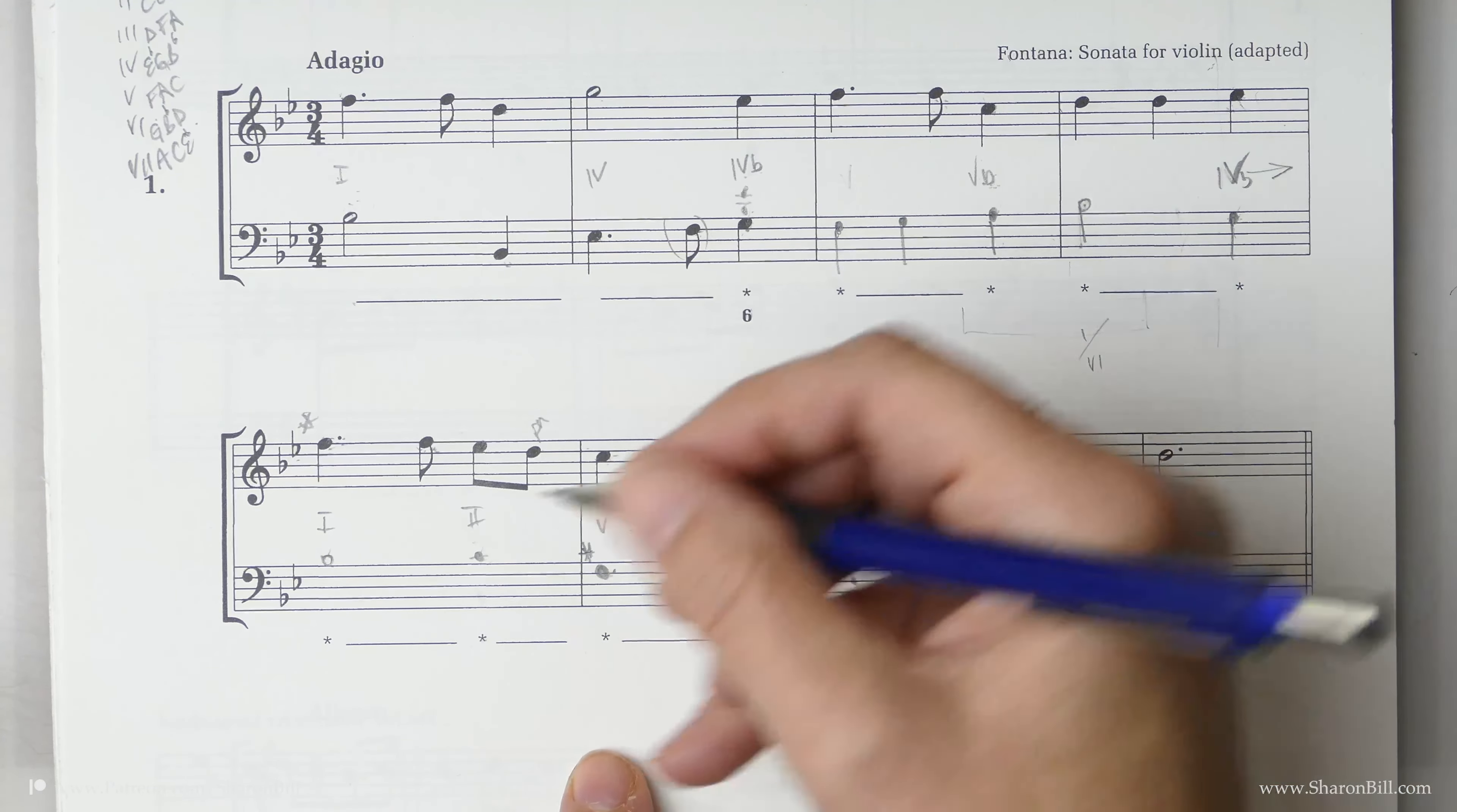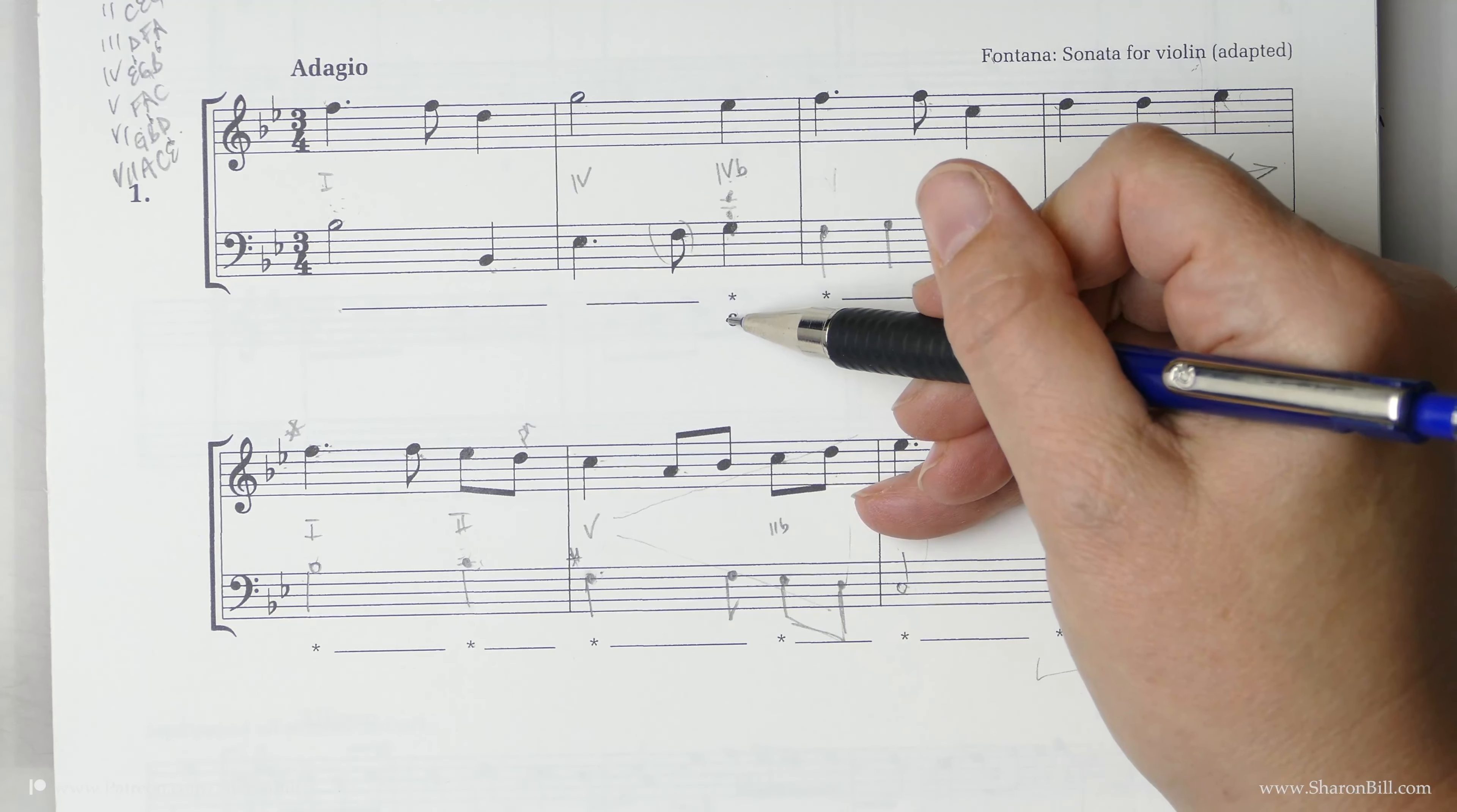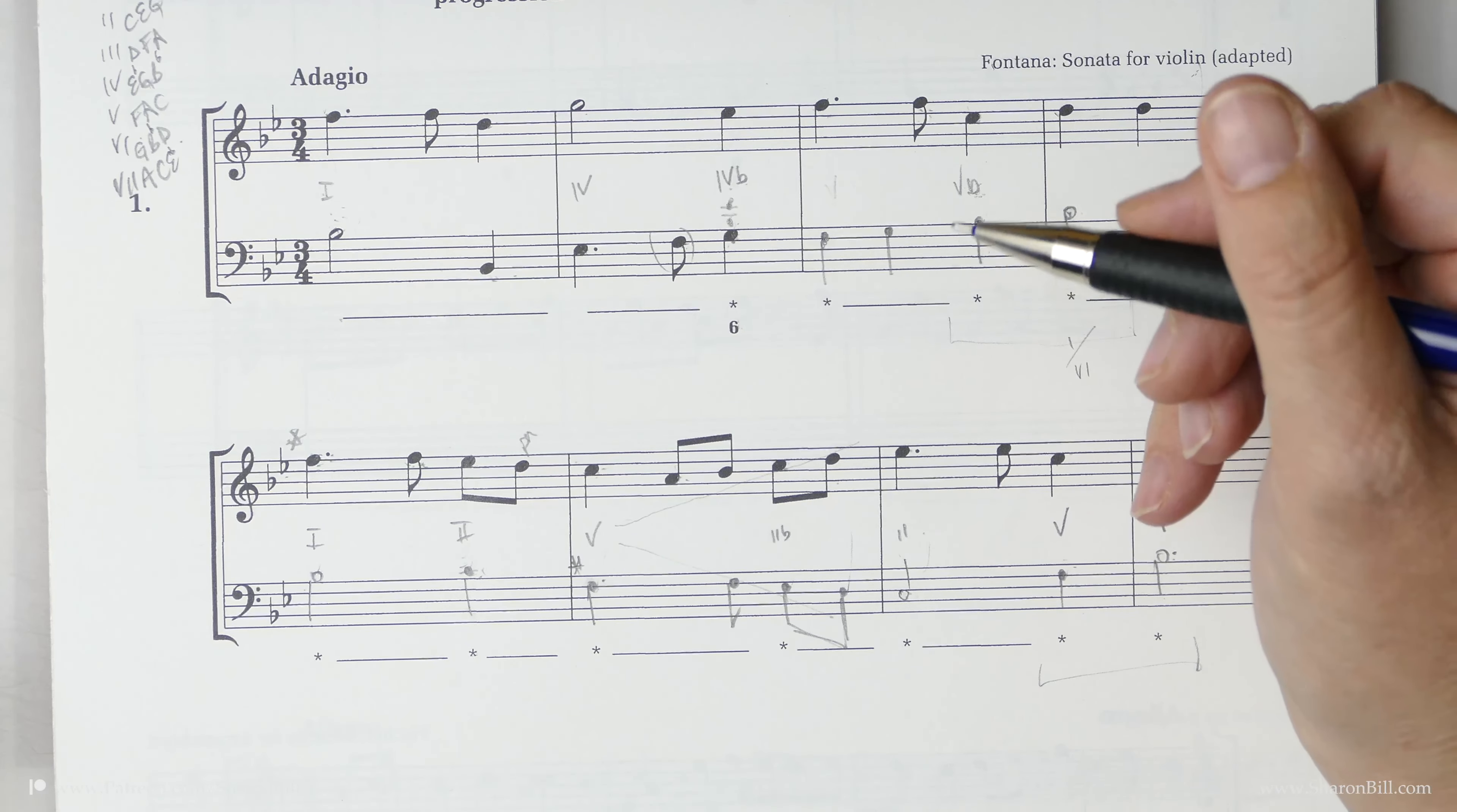So now we need to think about representing these chord choices as a figured bass. So 6-3 is a first inversion. If it's a root position no numbers are necessary. A second inversion is a 6-4, but if we just write six that implies a 6-3 so that's doing the job.